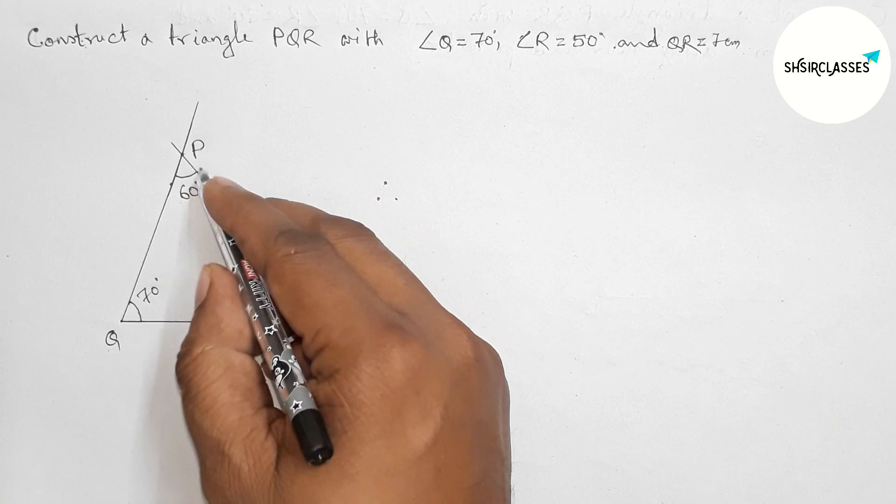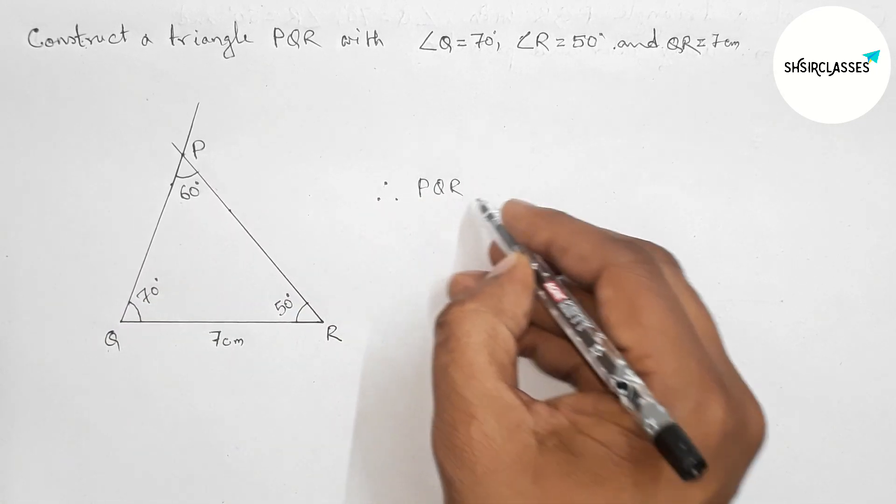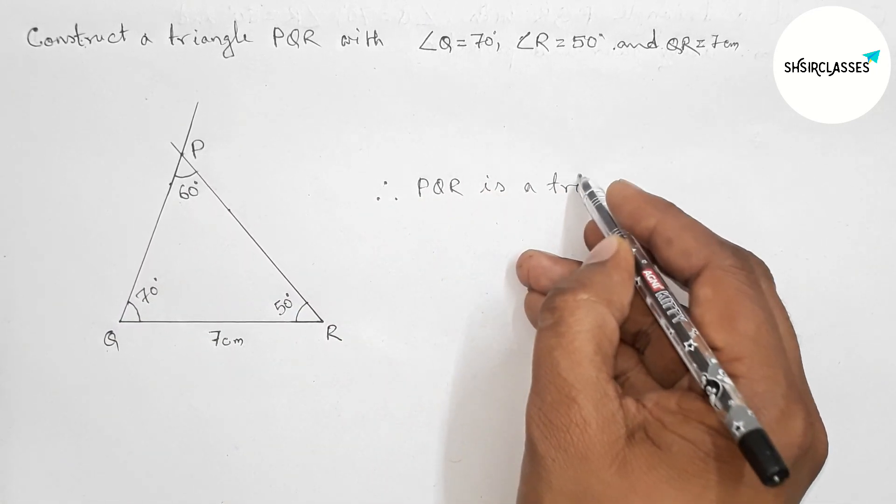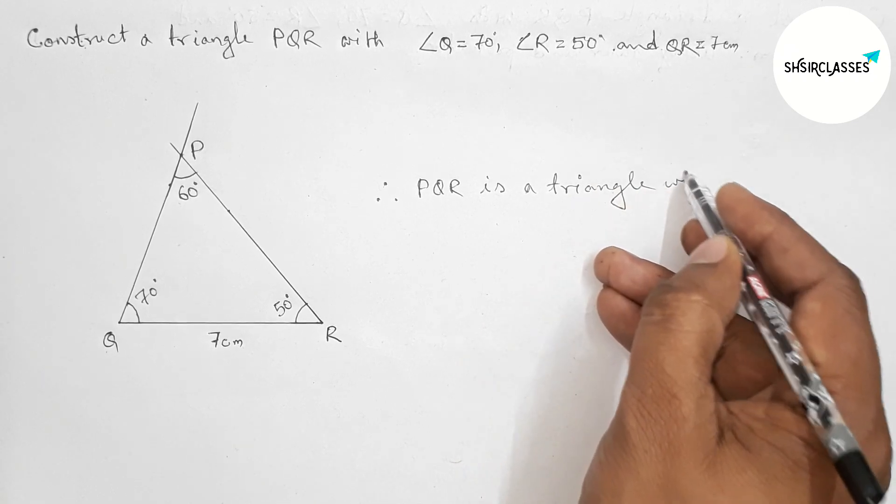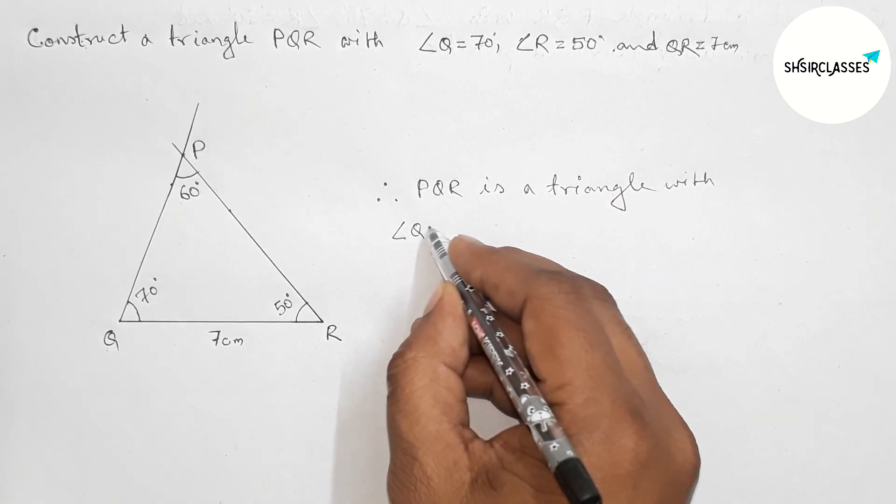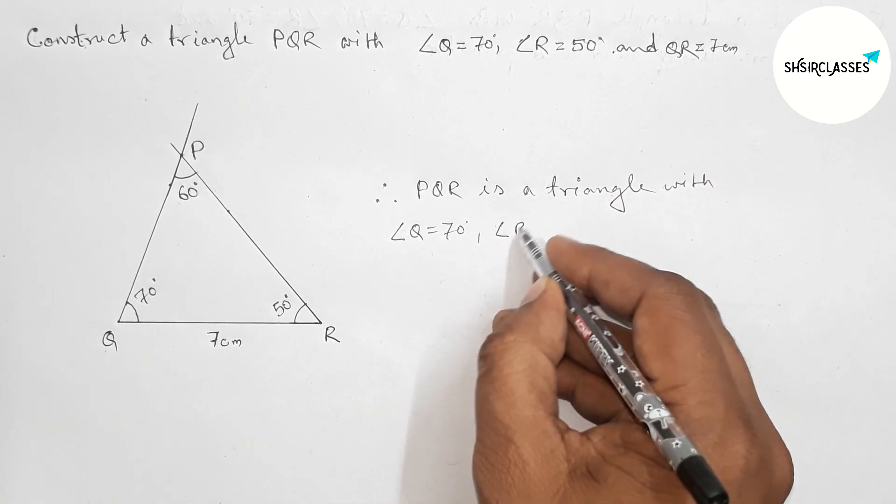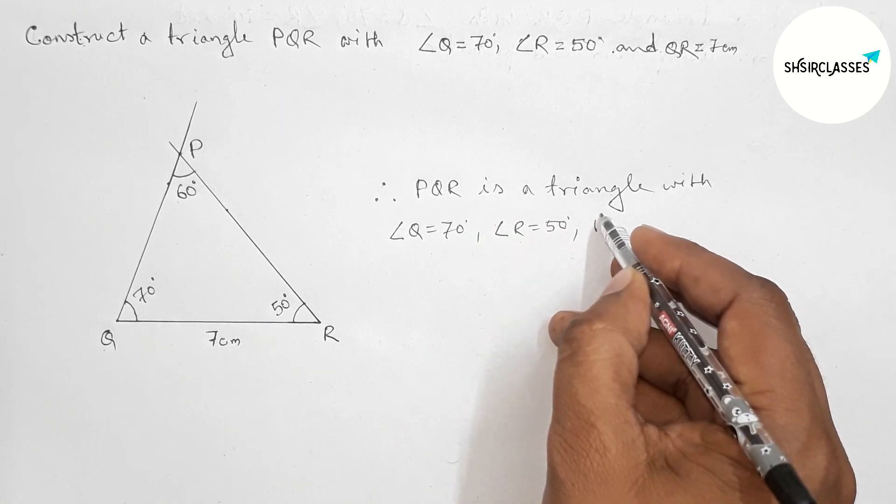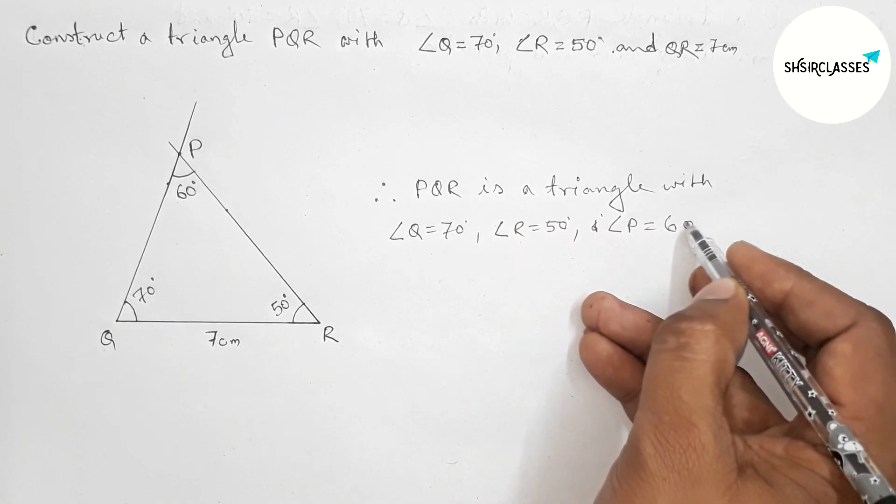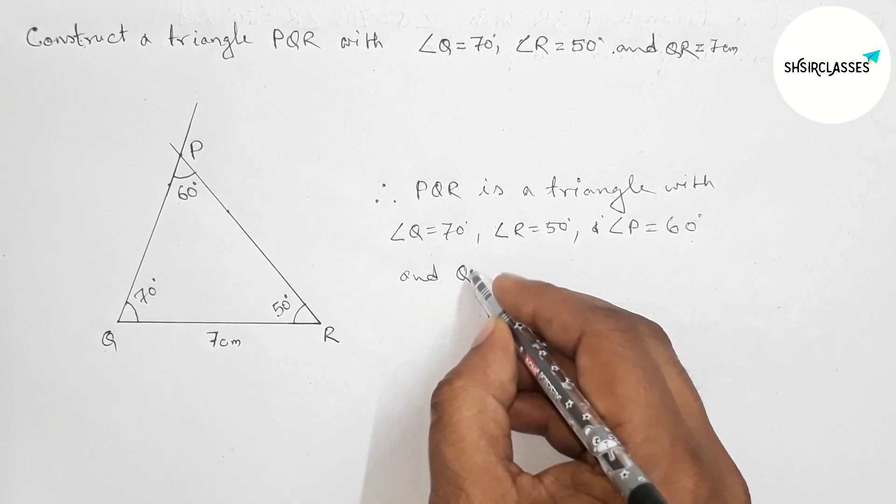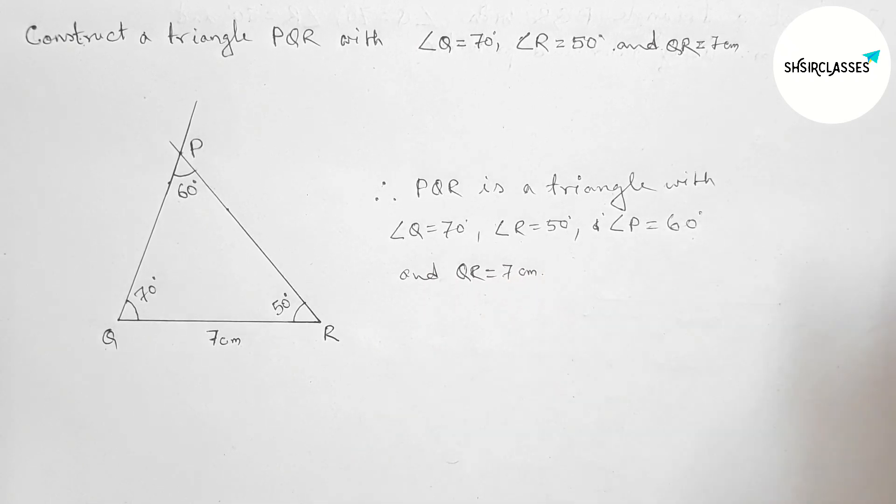Therefore, PQR is a triangle with angle Q 70 degrees, angle R 50 degrees, angle P 60 degrees, and QR equal to 7 centimeters. So that's all, thanks for watching. Please share it with your friends.